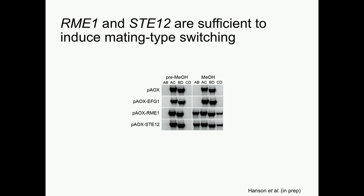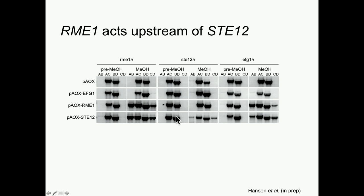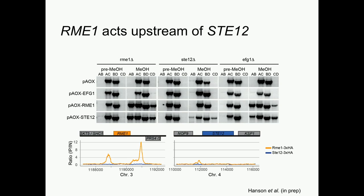I also looked at the effect of overexpression of these three transcription factors on the ability to switch mating type. Placing them under a methanol-inducible promoter, I found that RME1 and STE12 can both induce mating type switching even in the presence of nitrogen, but EFG1 is not sufficient for this process. When I overexpressed STE12 in the RME1 deletion background, switching was still possible. But the reciprocal is not true: overexpressing RME1 in the STE12 deletion background, you can no longer switch mating type. This suggests RME1 is upstream of STE12, further supported by a ChIP-seq analysis showing RME1 binds both its own promoter and the promoter of STE12.